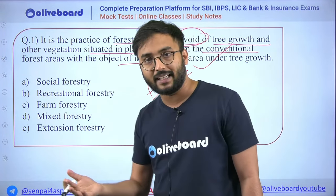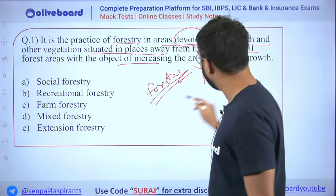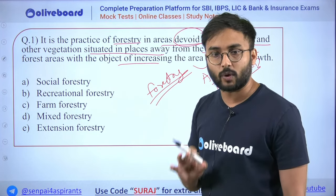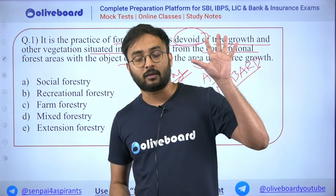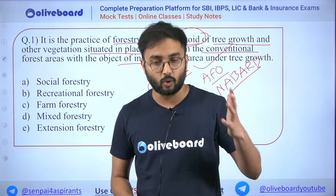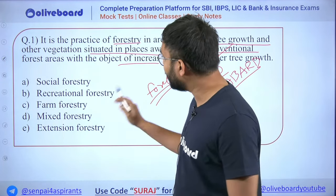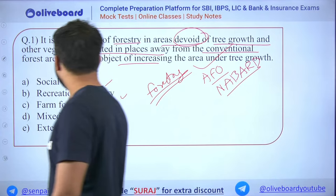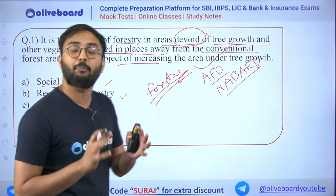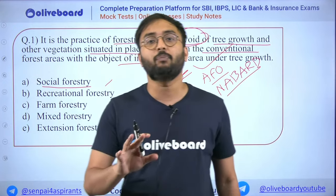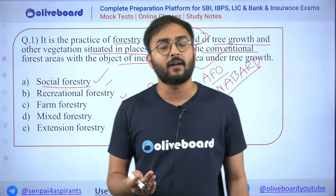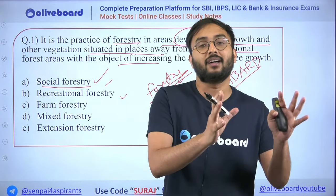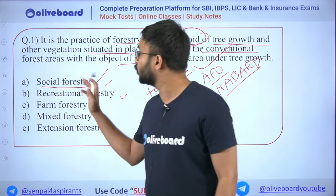This topic is on the AFO and NABARD syllabus. In forestry, the most important topic is the classification of forests. There are seven branches-wise classifications. Based on purpose/objective: social forestry means forest grown near villages or towns by a community on a particular land area.